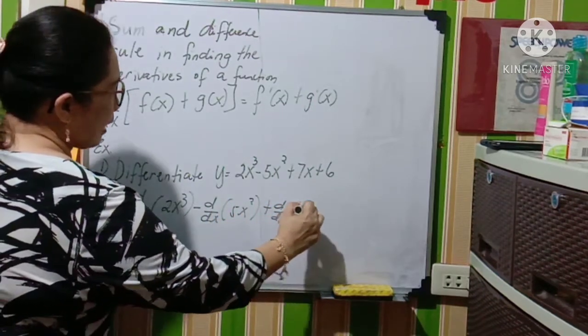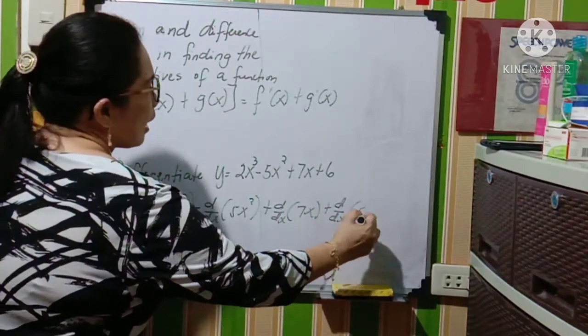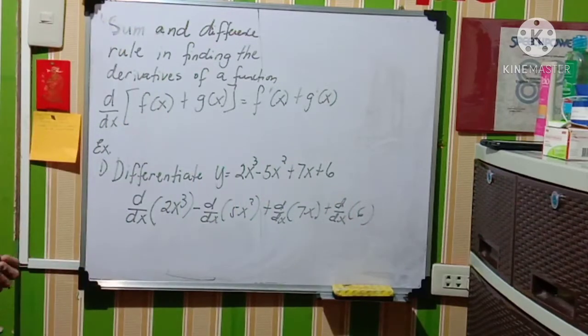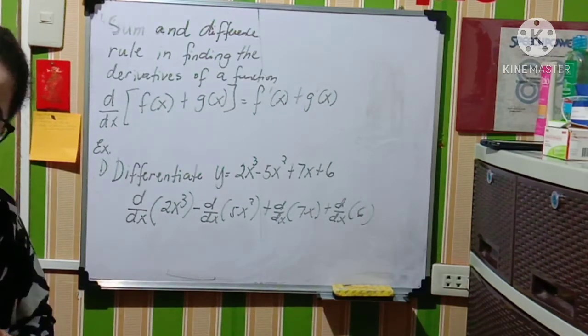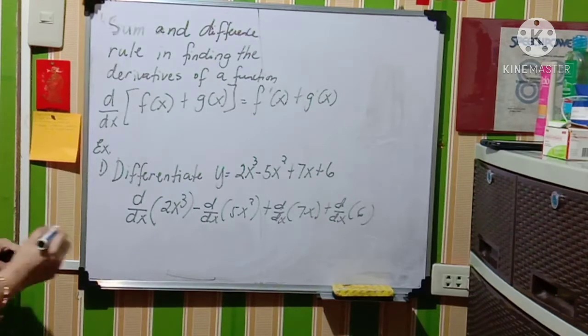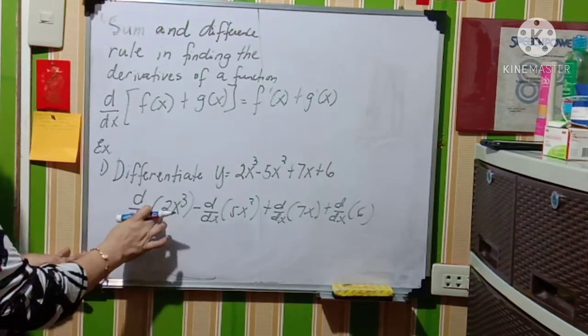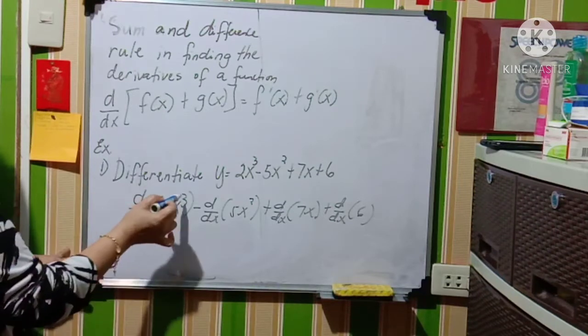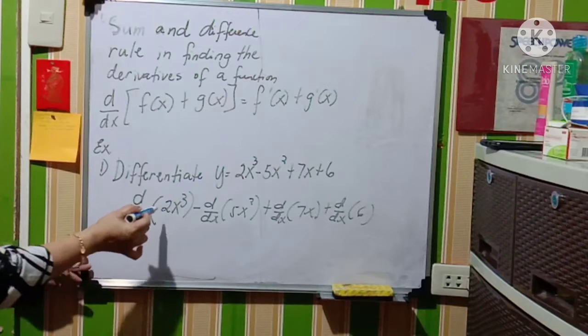Now we will be getting the derivative using the sum and difference rule. So as I mentioned, we will get the derivative of 2x cube. Multiply the exponent by 2, which is the numerical coefficient. 3 times 2 will give you 6x.